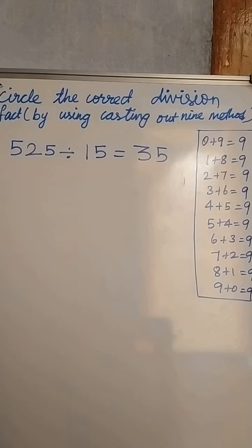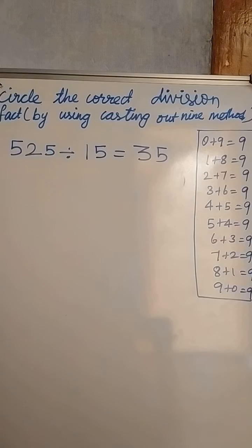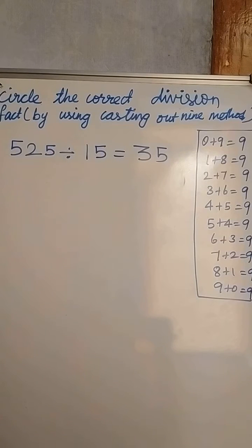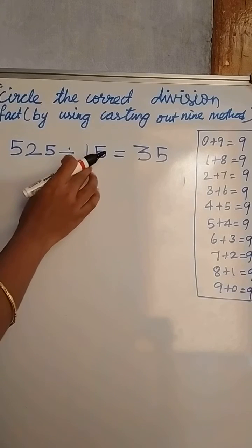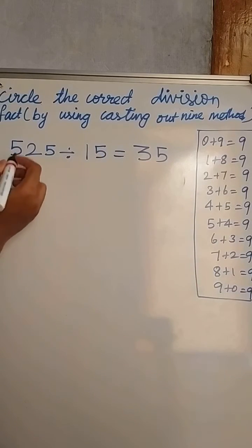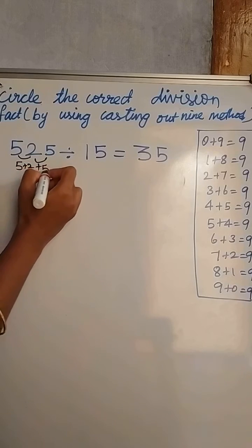The first condition is to remove the digit nine. The second condition is to check the possibility of getting a sum of nine. Here there is no nine, and no possibility of summing to nine in any of the numbers.